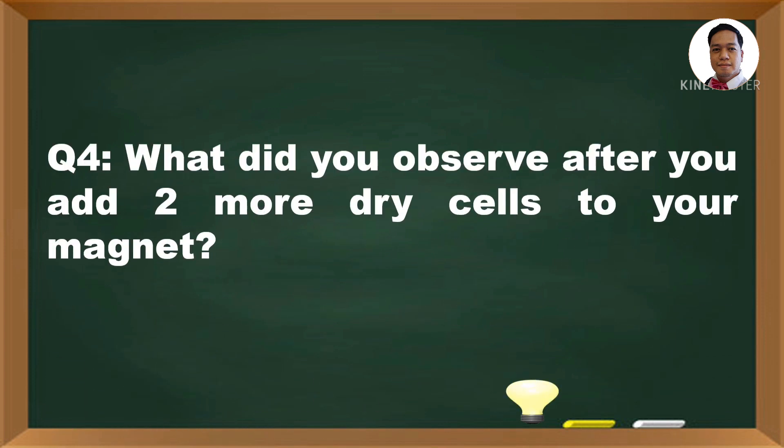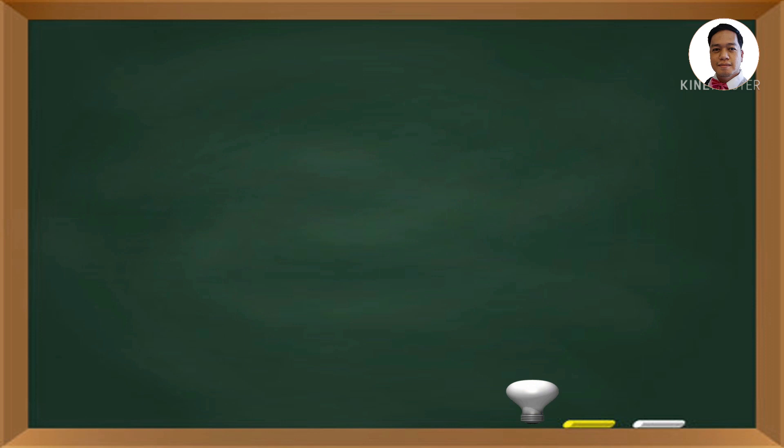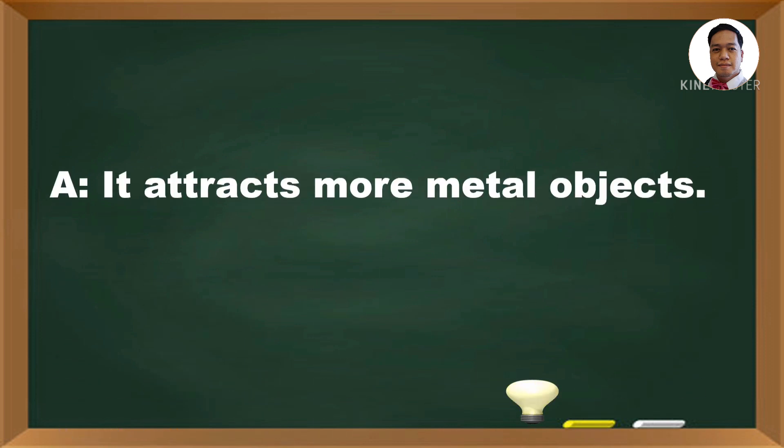Question number 4: What did you observe after you add two more dry cells to your magnet? The answer is, it attracts more metal objects.